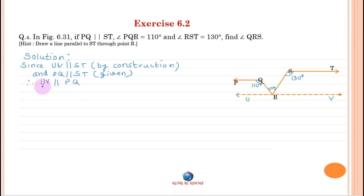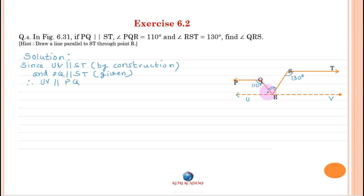Since UV is parallel to PQ and QR is a transversal, therefore angle PQR plus angle QRV equals 180 degrees, because the sum of two co-interior angles on the same side of the transversal is equal to 180 degrees.